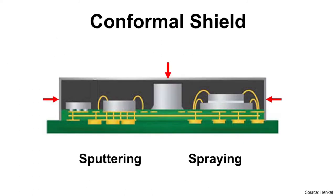Conformal shield is to coat shield material over a package for EMI shield. Conformal means to follow shape. So package shape before and after conformal shield coating is the same. The only difference is coating thickness.